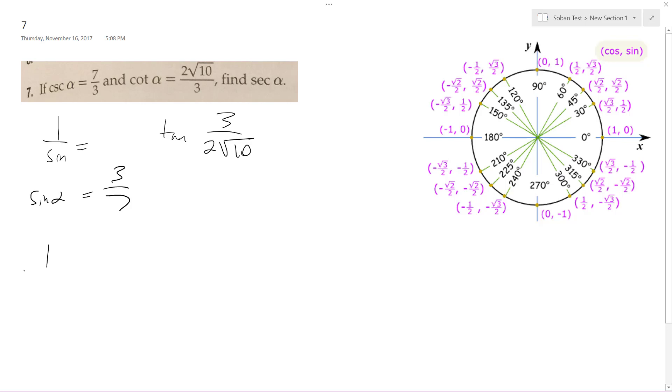So we want the secant, secant's 1 over the cosine. So opposite, this is 3, this is 7, and this is 2 root 10.